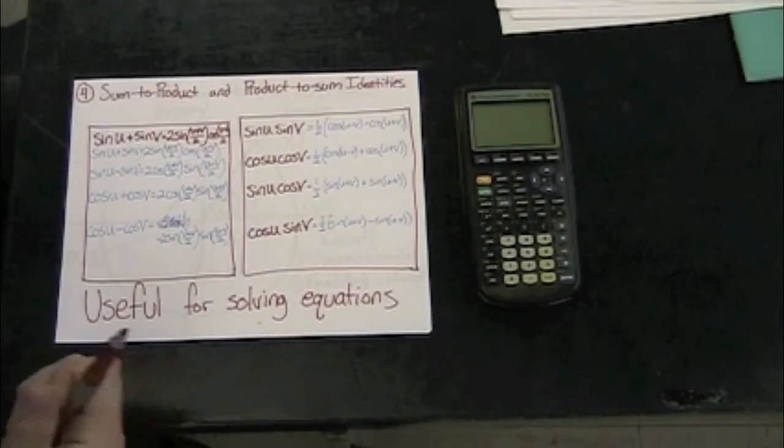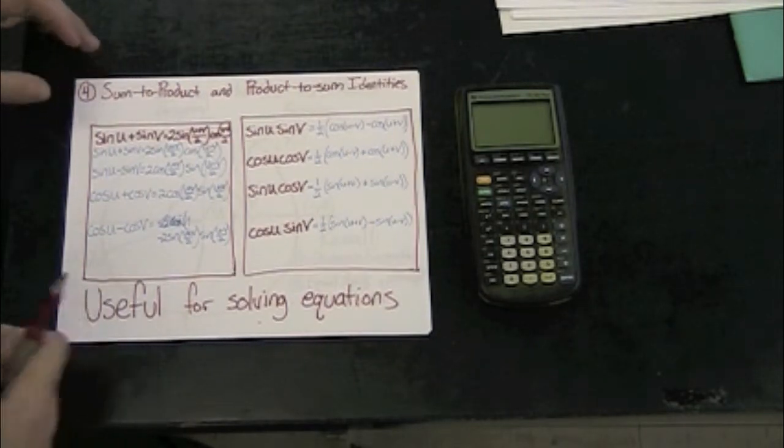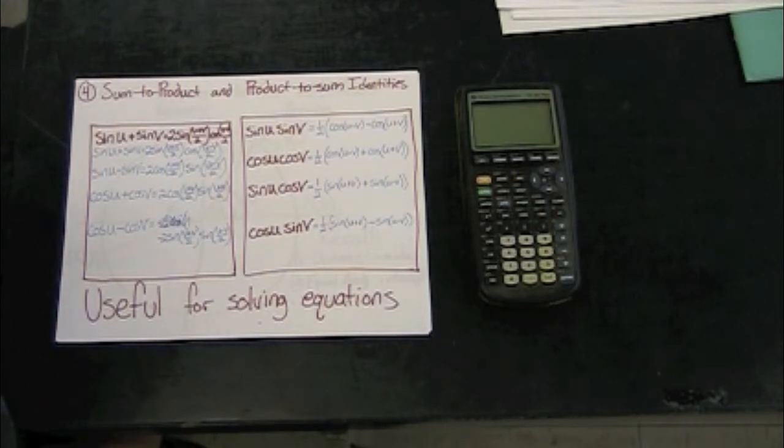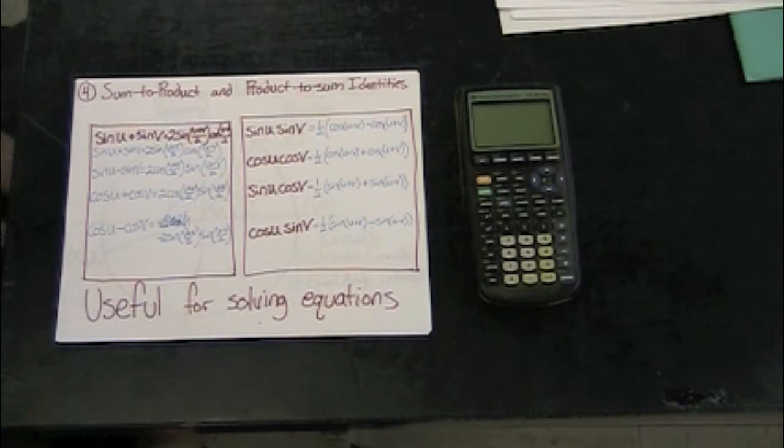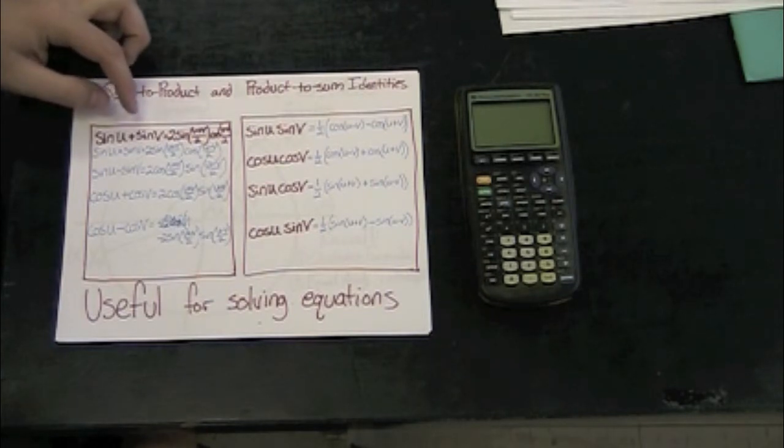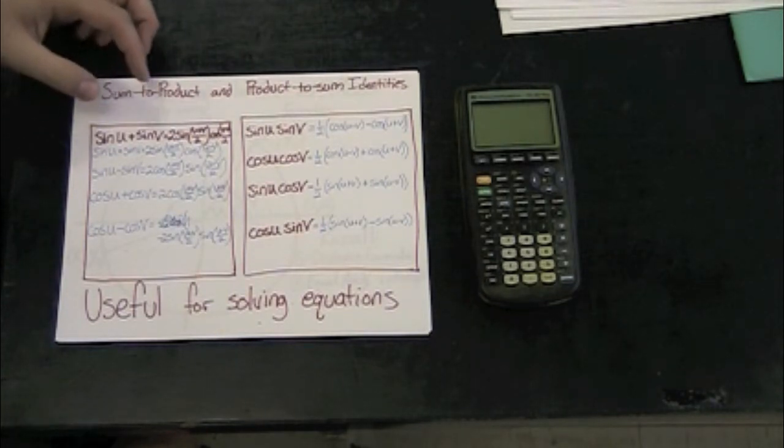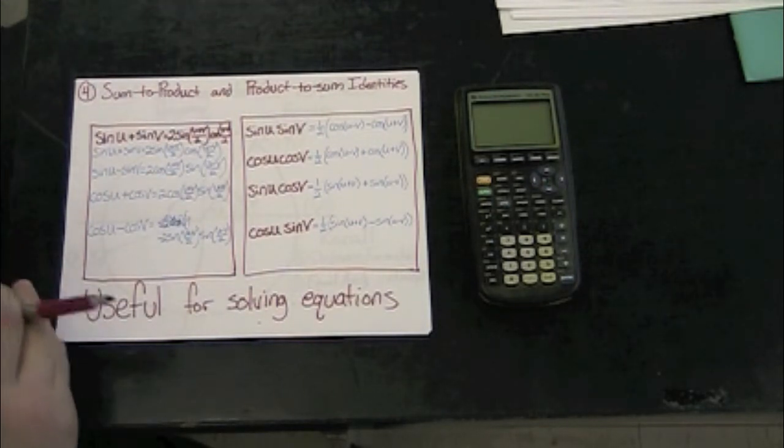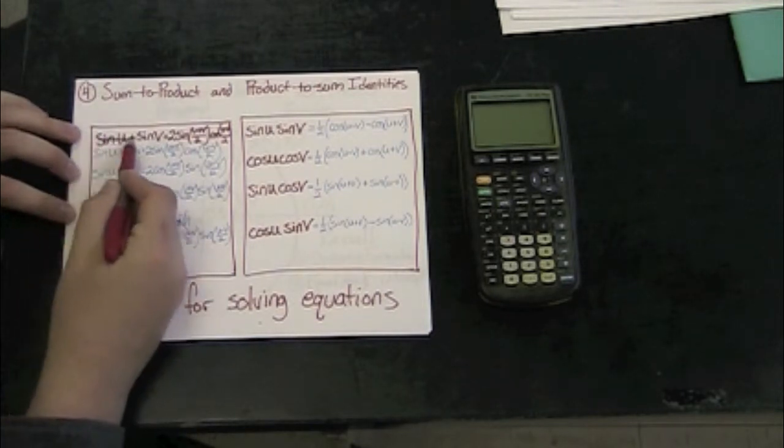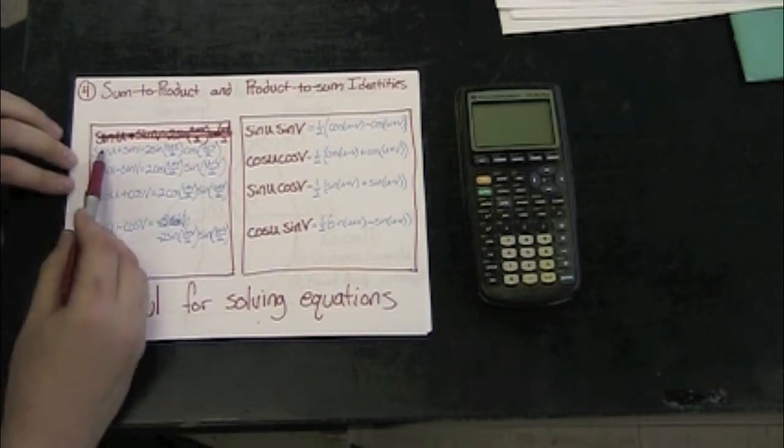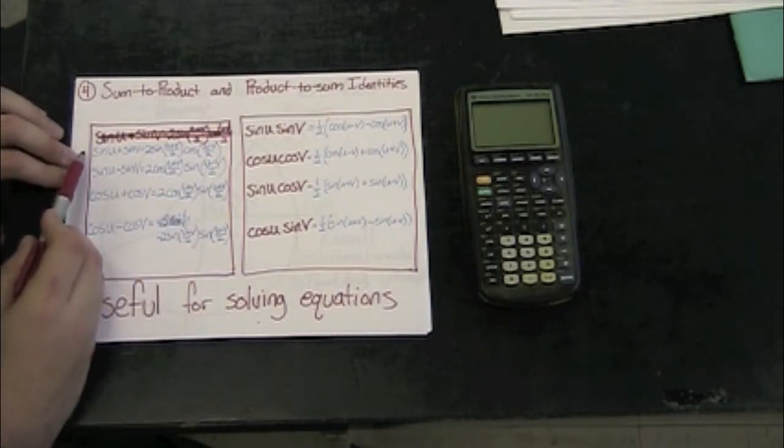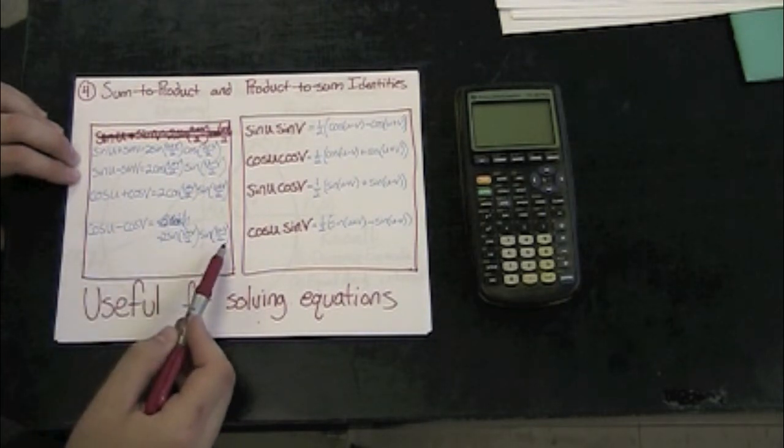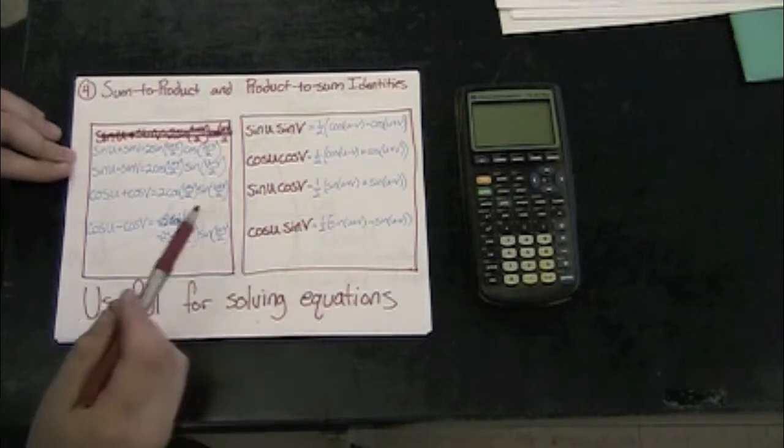The last set of formulas or identities that I'm going to be using today, or at least showing to you, are the sum to product and product to sum identities. These are really useful in solving equations because they deal with combining the sine or cosine of two angles into a product from a sum or a sum from a product. And some problems that we would not otherwise be able to solve, this gives us an out to solve. Here I've just listed, and I apologize for the messy first formula, but here I've listed the identities for sums and differences to be rewritten as products, and for products to be rewritten as sums and differences.